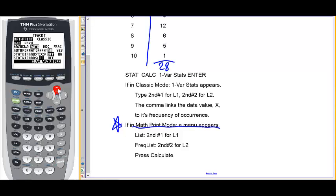So, under mode, I'm simply turning off the stat wizards and setting math print back to classic mode. Some calculators don't even have this option. They're all in classic mode.